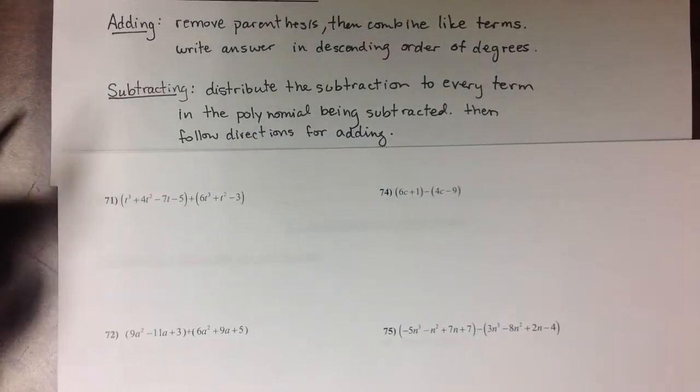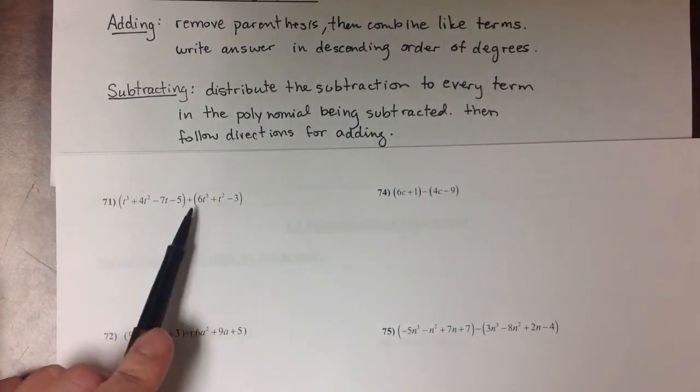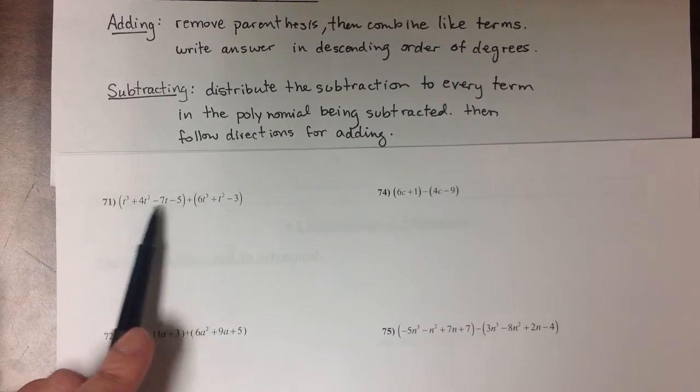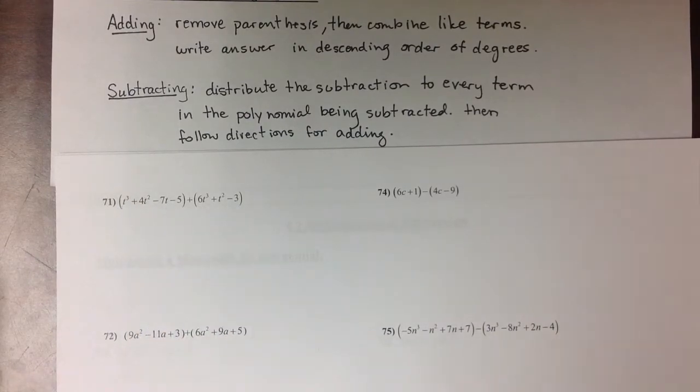So let's look at some examples of that. In problem 71, we have two polynomials, this one right here and this one right here, that are getting added together.